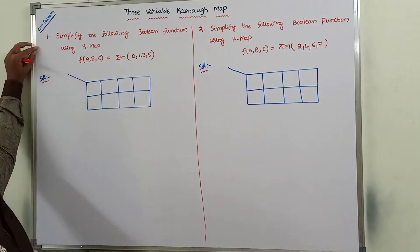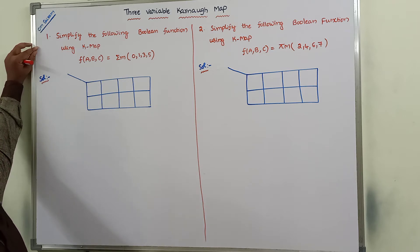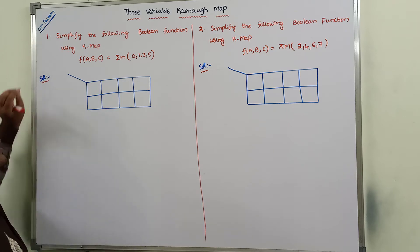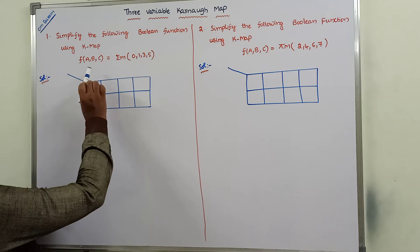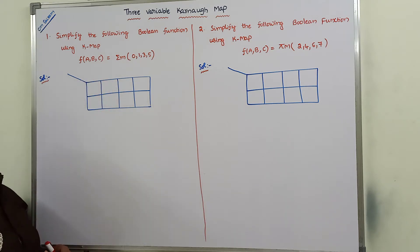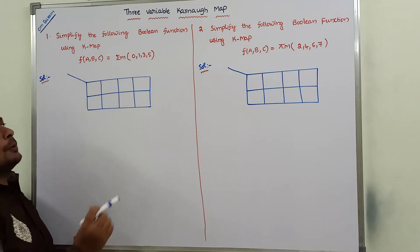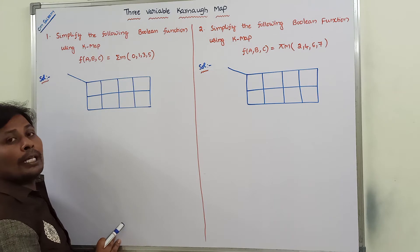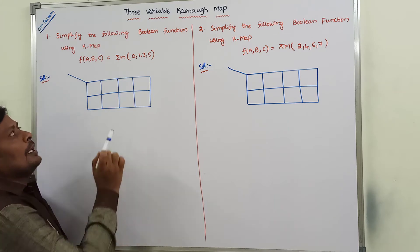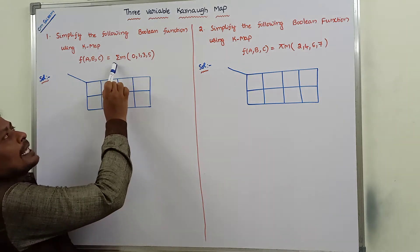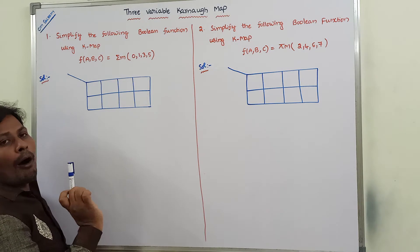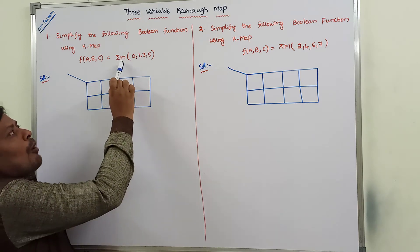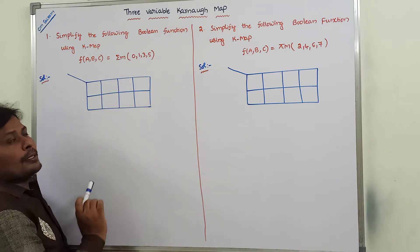First problem: simplify the following Boolean function using K-map. f(A, B, C) = Σm(0, 1, 3, 5). Here, sigma means sum of, and small m means minterms. So, sum of minterms: 0th minterm, 1st minterm, 3rd minterm, and 5th minterm.